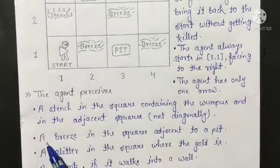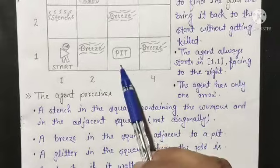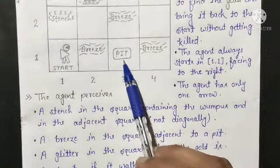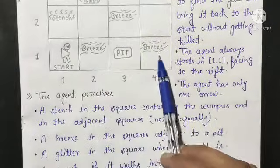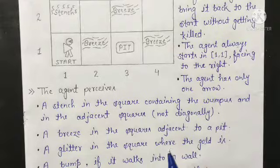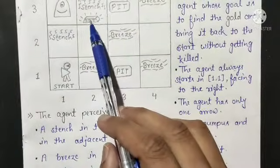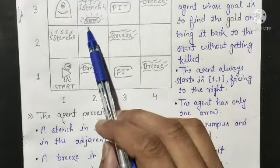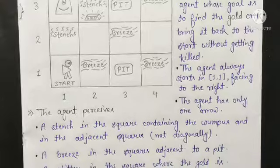Next, a breeze in the square adjacent to a pit. So in the adjacent room of the pit there is a breeze, and the agent can feel this. A glitter in the square where the gold is — wherever gold is present, a glitter will be seen by the agent.